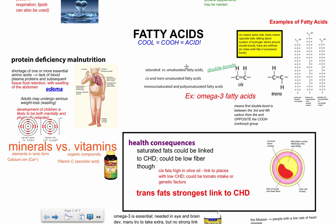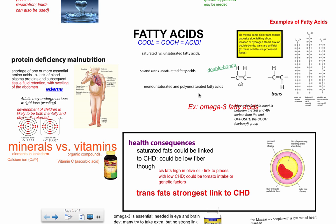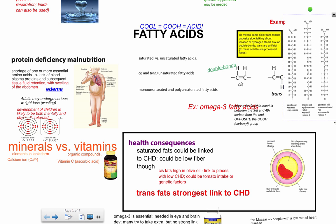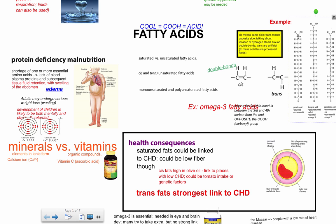Fatty acids can be sorted in several ways: saturated versus unsaturated, cis and trans unsaturated, and monounsaturated versus polyunsaturated. A saturated fatty acid has no double bonds — every carbon has a full set of bonds. An unsaturated fatty acid has one or more double bonds in the chain. So saturated means no double bonds; unsaturated means double bonds exist.